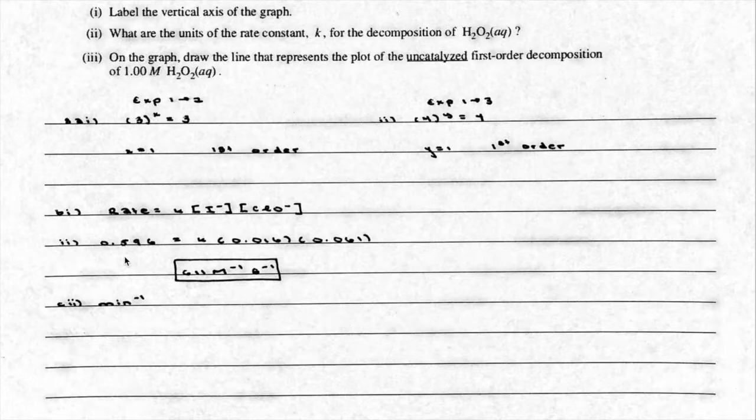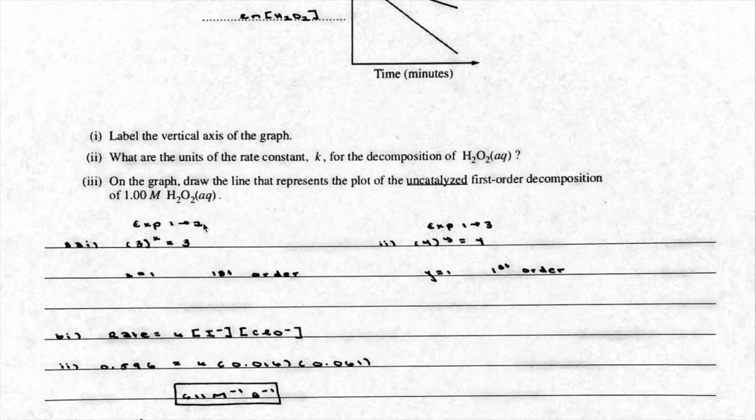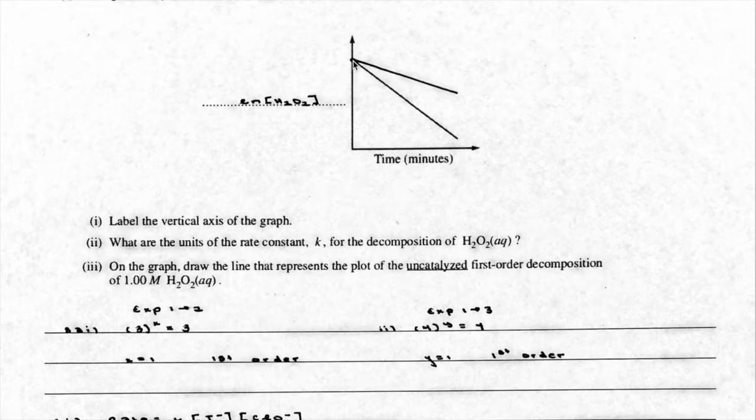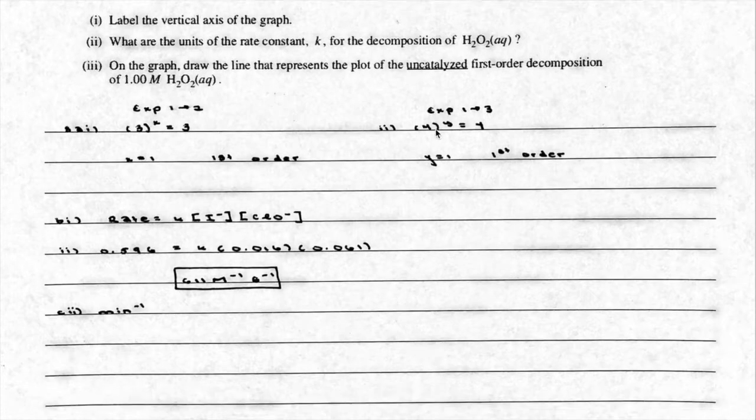And then finally, on the graph, draw the line that represents the plot of the uncatalyzed first order decomposition. So initially, at the very beginning, the ln of concentration is going to be the same, because it's not influenced by the fact that it doesn't have a catalyst yet. But as time progresses, the concentration of H2O2 is going to change more slowly if it's uncatalyzed than if it were catalyzed, which tells me that the slope of this line is going to be less steep. If it were more catalyzed, it would be steeper. So this is kind of wonky, simply because you need to make sure that it starts at the same point, because at the very beginning, you're going to start with the same concentration whether or not you have a catalyst. But then knowing that if it's uncatalyzed, the rate is going to be slower, the slope is going to be less steep than if it were catalyzed. And that's it. That's the whole problem.